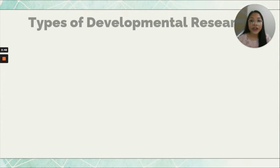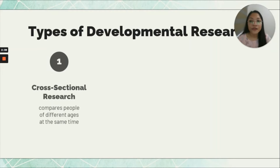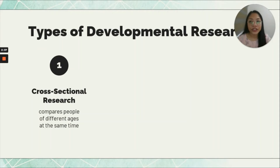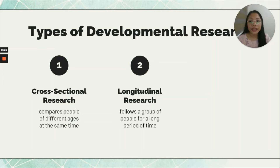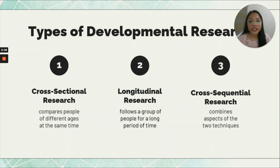Here are the types of developmental research. First, cross-sectional research, which compares people of different ages at the same time. Longitudinal research, which follows a group of people for a long period of time. And cross-sequential research, which combines aspects of the two techniques.